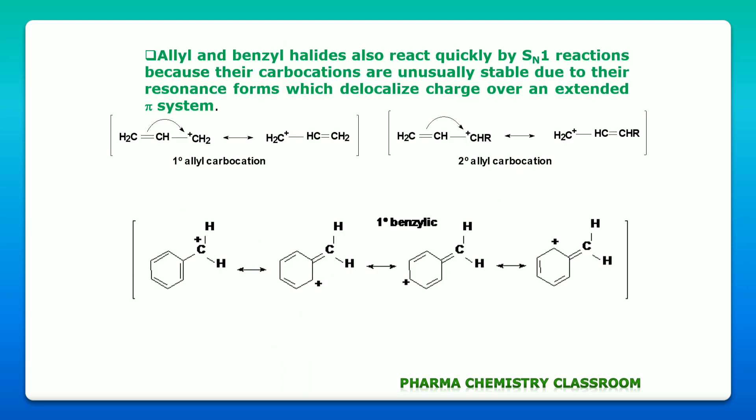That is why a substrate which is tertiary in nature can undergo SN1 reaction more readily than primary and methyl alkyl halides. Allyl and benzyl halides also react quickly by SN1 reaction because there is resonance present in the cation. This resonance increases the stability of the carbocation and thus the reactivity towards SN1 reaction also increases.